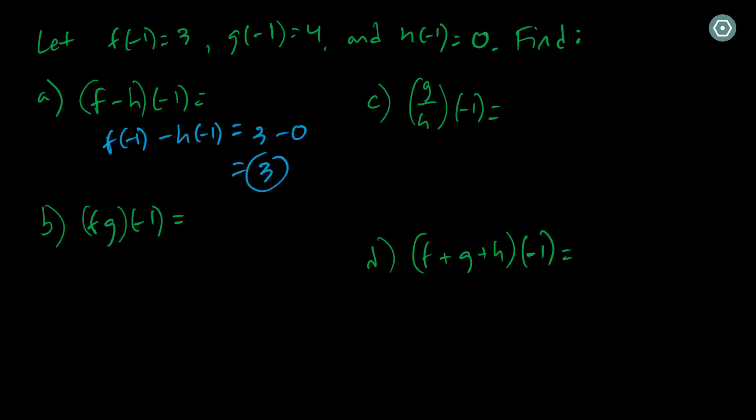What about the f times g function? It's the same idea. So here, that means I need to take f of negative 1 and multiply that by g of negative 1. These are both outputs with the input of negative 1. The first one has an output of 3, and the second one has an output of 4.